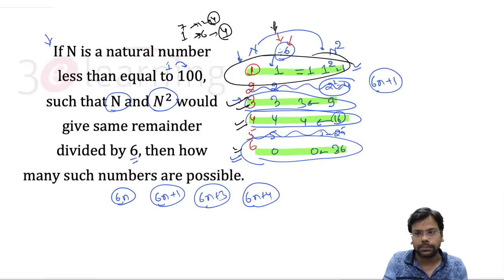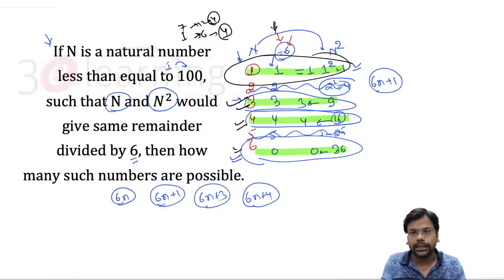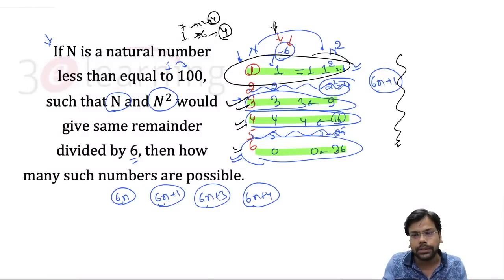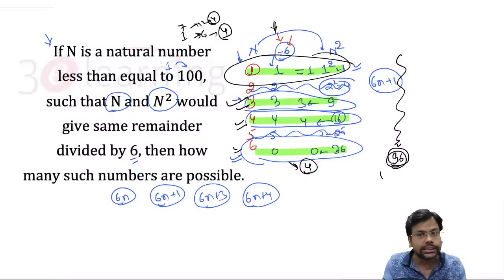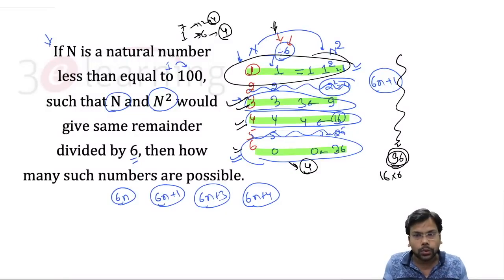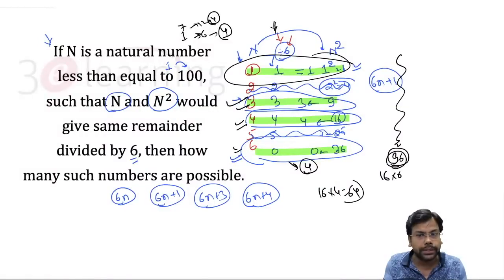In each bundle of six consecutive numbers, you have 4 valid numbers. Up to 96 — which is the 16th multiple of 6 — you have 16 bundles. So that gives 4 × 16 = 64 numbers up to 96.